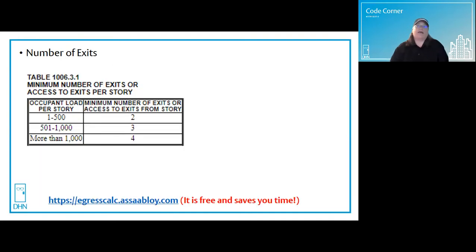The minimum number of exits or exit access per story or space with an occupant load of one to 500 people is two minimum. 501 to 1,000, you need three, and more than 1,000, you're required to have a minimum of four exits.